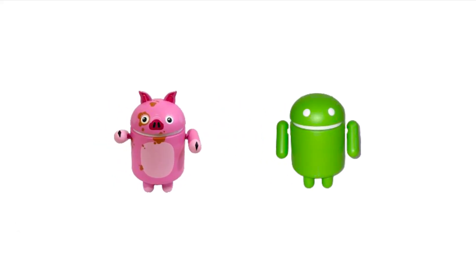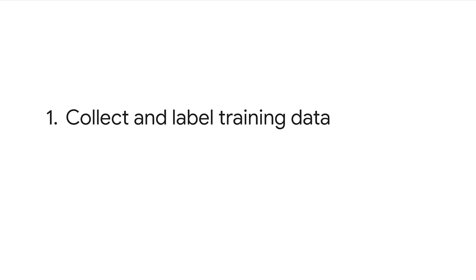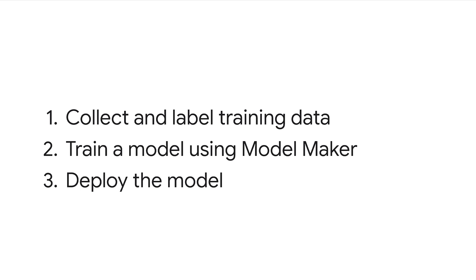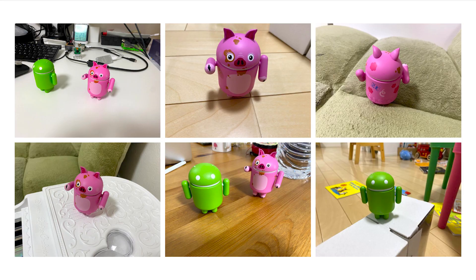For example, if you want an object detection model that can detect Android figurines, the EfficientDet-Lite model from TensorFlow Hub cannot do that for you — you'll need to train a custom object detection model. There are three steps: first, collect and label the training data; then train a custom object detection model using TensorFlow Lite Model Maker; and finally, deploy the model by replacing the model downloaded from TensorFlow Hub with your custom model. You'll start by taking a lot of photos containing the objects you want to detect. You can start with a dozen images per class for a prototype model.